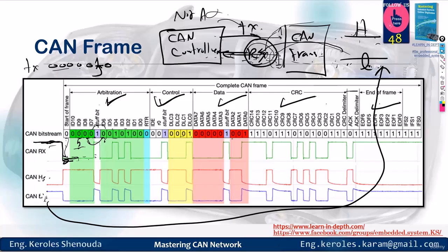Now, what does the frame look like? The frame consists of start of frame, arbitration, control data, CRC, acknowledgement, and end of frame. All right, folks, let's dive into this one.